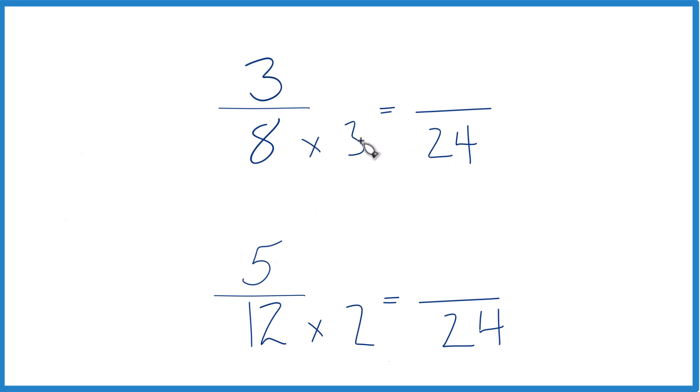But since we multiplied by 3 here, we have to do that on the top as well. 3 times 3 is 9. And then down here, we need to multiply the top by 2, since we multiplied the denominator by 2. 5 times 2 is 10. Now we just compare these numerators. And you can see 10 is larger than 9.